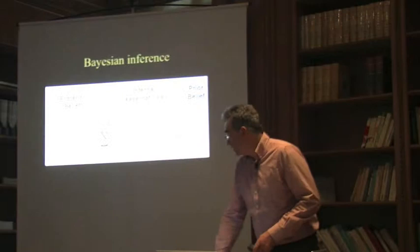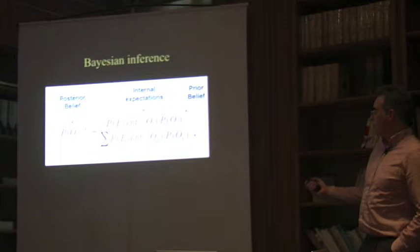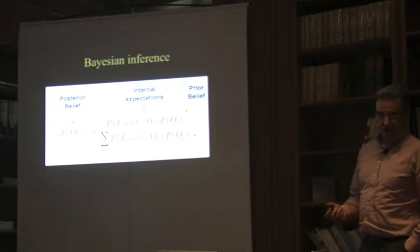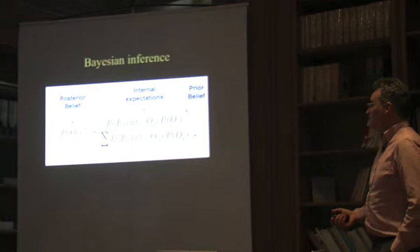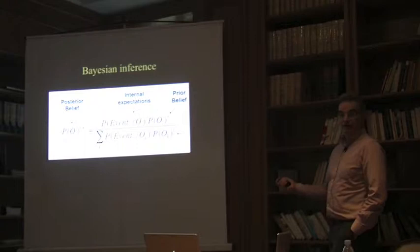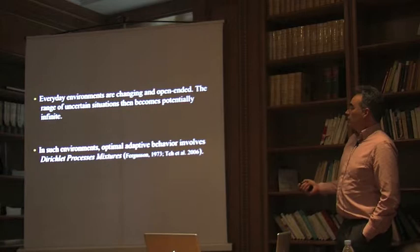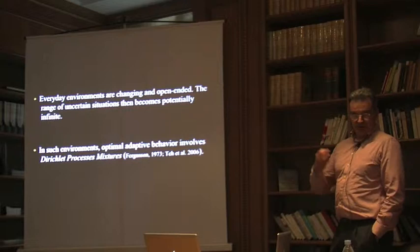Bayesian inference involves having prior beliefs about the reliability or relevance of some option in a given situation, which you update according to the occurrence of external events to get a posterior belief. What is critical is that you need an exhaustive representation of all possible options and must learn the likelihood of events given different options. This is a problem in everyday life because environments are changing and usually open-ended, making the range of uncertain situations potentially infinite.